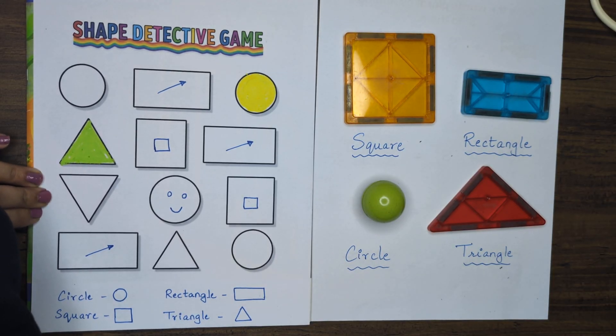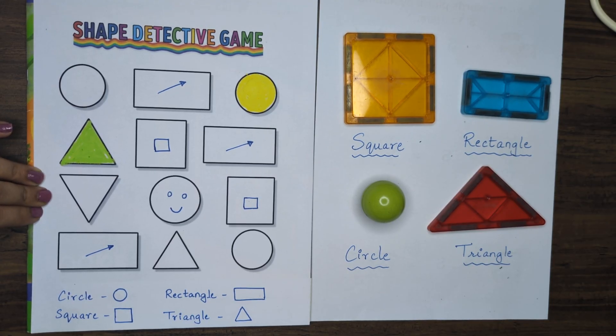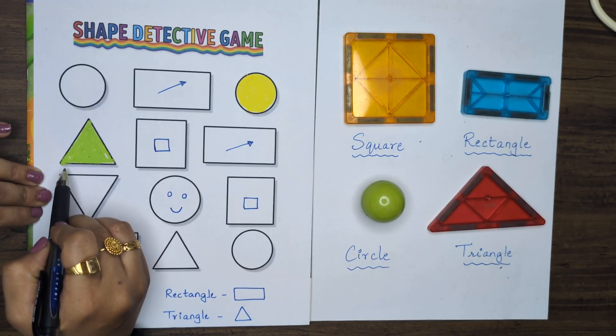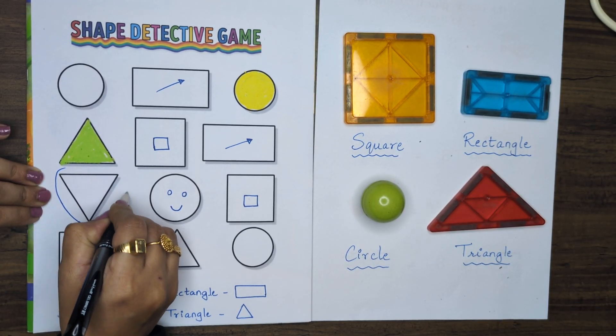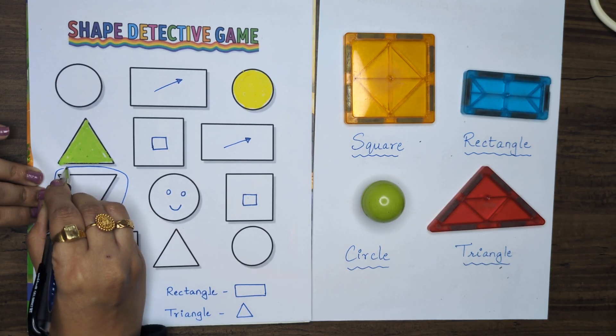The next question is, circle around the upside triangle. What is an upside triangle? See, this is a straight triangle. This is an upside triangle. So I have to circle around the upside triangle.